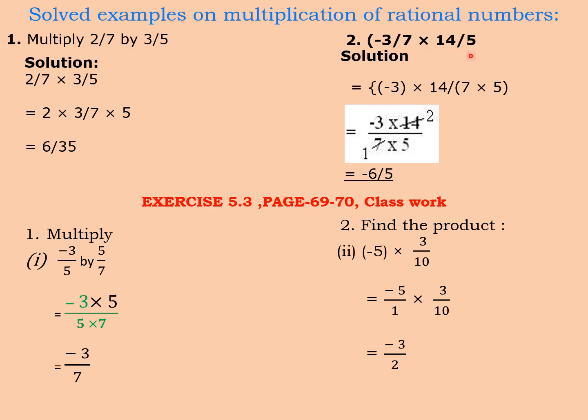Same way, minus 3 by 7 into 14 by 5. So here what we will do? Minus 3 into 14 since they are the numerators divided by 7 into 5. Now here they are cancelling. 7 ones are 7, 7 twos are 14. So minus 3 into 2 will be minus 6 and 1 into 5 will be 5. So the answer is actually minus 6 by 5.